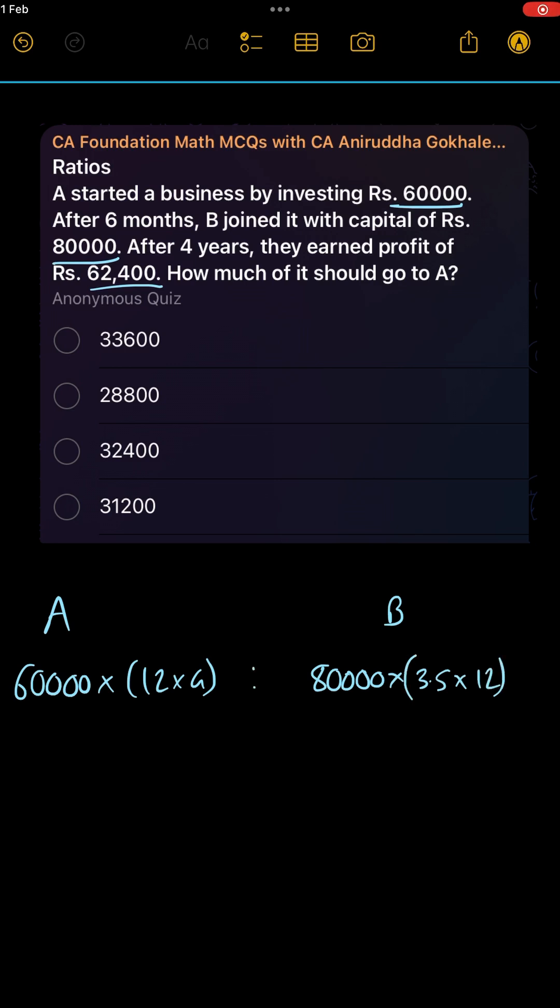If you calculate this, the ratio will be 28.8 lakhs to 33.6 lakhs.